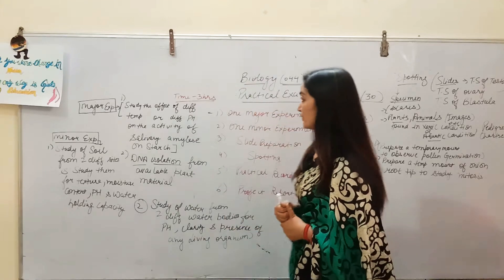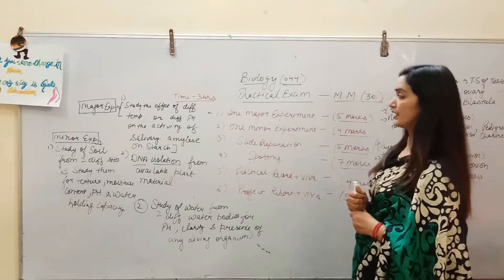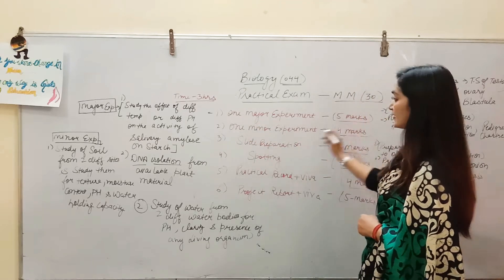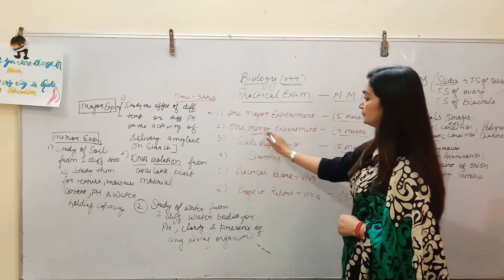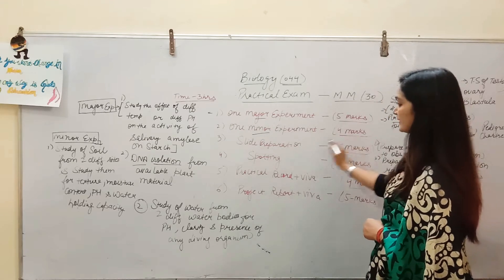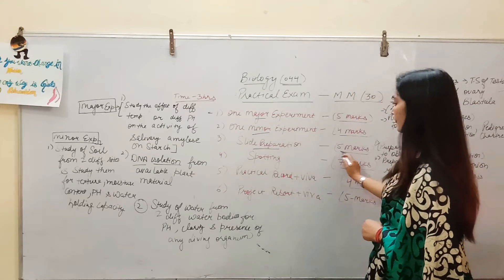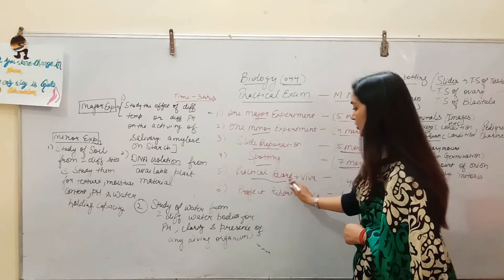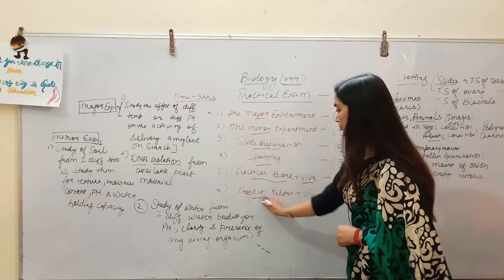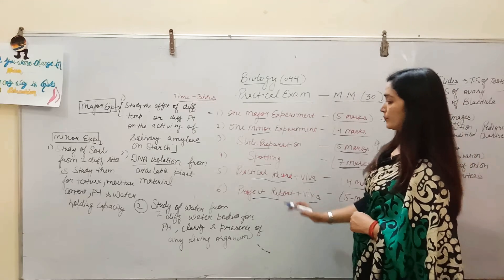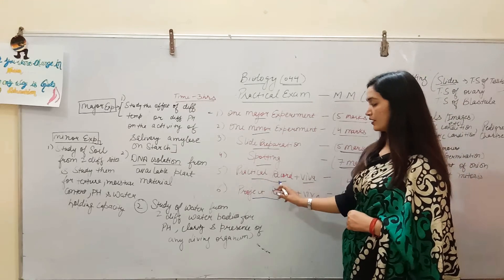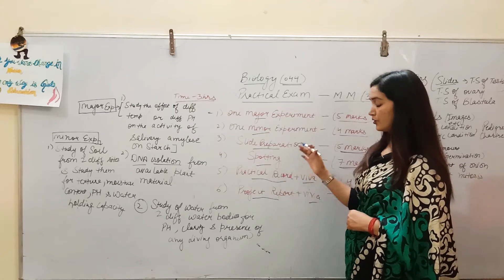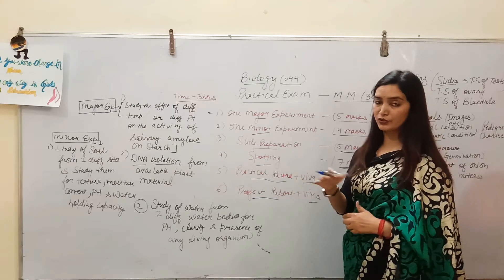In your 30 marks practical exam, you have to perform one major experiment for 5 marks, one minor experiment for 4 marks, slide preparation for 5 marks, spotting for 7 marks, practical record for 4 marks, and project report for 5 marks. You have to read the practical file and complete all calculations and observations accordingly, and draw diagrams related to the topic.